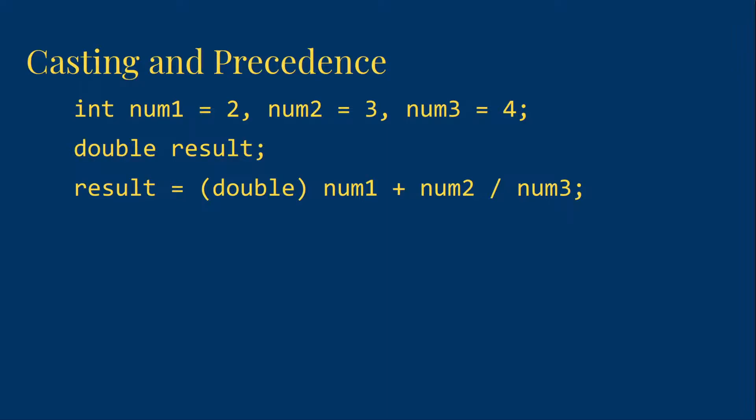One common mistake is this one. The problem here is that we make num1 a double, but we still apply integer division to num2 and num3, getting zero, before the double gets involved. So the result is 2.0, not the desired 2.75.